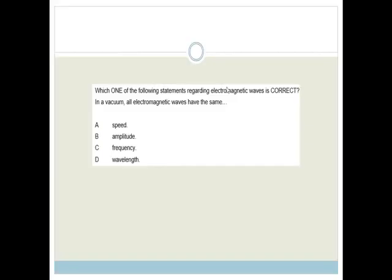Next. It says which one of the following statements regarding electromagnetic waves is correct? In a vacuum, all electromagnetic waves have the same speed, amplitude, frequency, or wavelength. We've just shown that waves will not have the same frequency because of the energies. Frequency and wavelength are related because velocity is equal to lambda frequency. The correct answer is speed because all electromagnetic waves in a vacuum travel at a constant of 3 times by 10 to the 8 meters per second, which we think of as the speed of light.